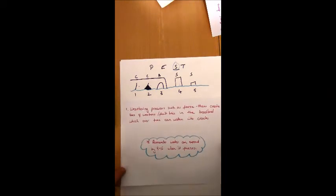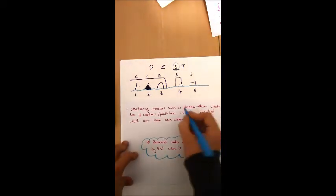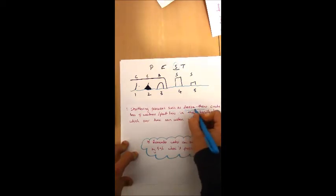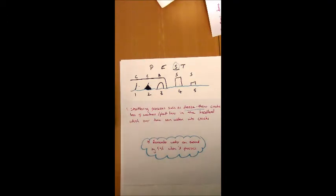Stage one then. Basically, what happens is weathering processes such as freeze-thaw—really important there, good terminology, and also a process—creates lines of weakness or fault lines in the headland, which over time can widen into cracks in the headland. You've got to remember that these processes repeat regularly, and during freeze-thaw, water can expand by about 9%, so that constant expanding process can eventually create quite significant fault lines in the rock.